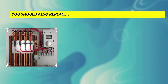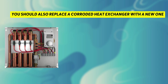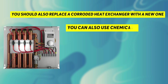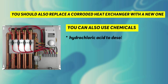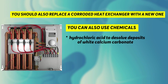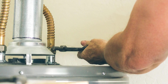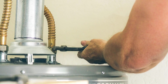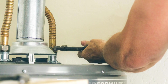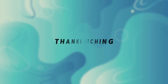You should also replace a corroded heat exchanger with a new one. You can also use chemicals, like hydrochloric acid, to dissolve deposits of white calcium carbonate. Lastly, clean the exhaust vent regularly with a rag or brush, and in case it's broken, replace it immediately. Thanks for watching.